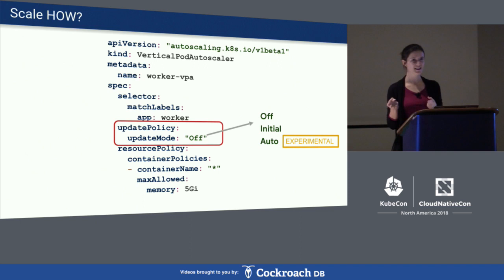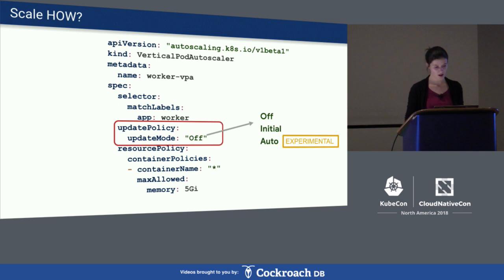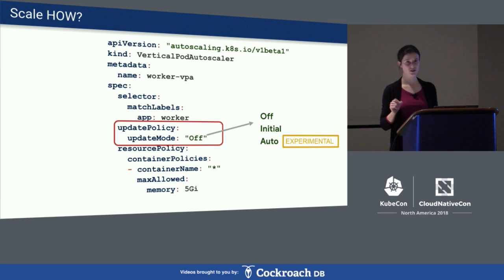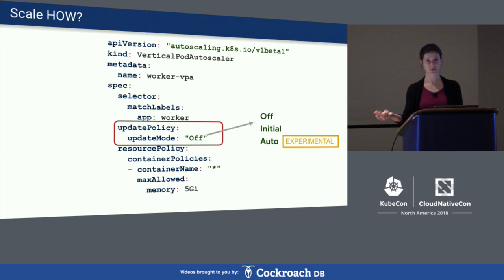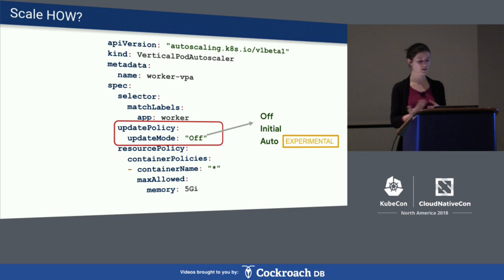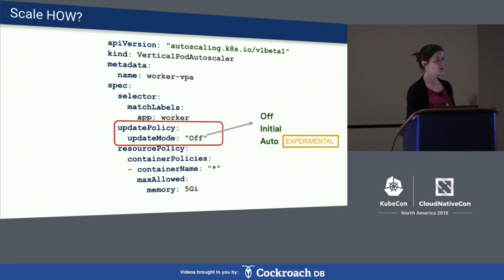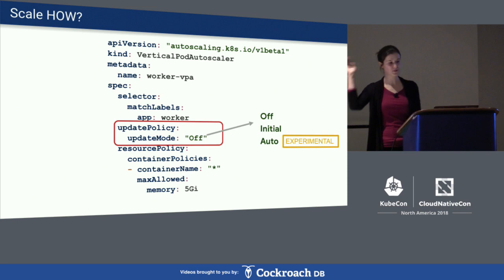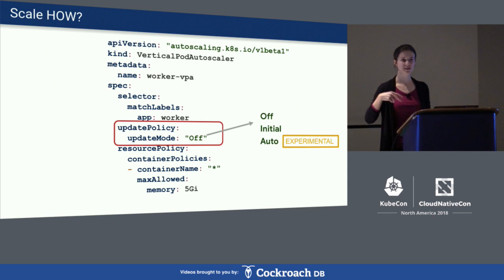The 'how to scale' part consists of update policy and resource policy. The update policy lets you control the actuation part — how recommendations are applied to your workloads. There are three update modes available. The first is 'off,' which is a dry run: it provides recommendations but will never actually modify your pod requests. The second mode is 'initial,' which only changes pod requests during creation but will never forcefully restart your pods. The third is 'auto,' the full thing, which looks at running pods and restarts them once their requests are too far off from the recommendation.